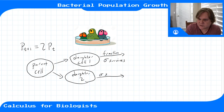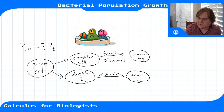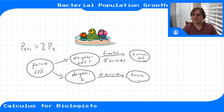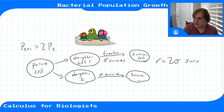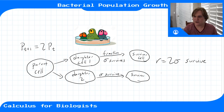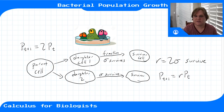So let's say on average a fraction sigma survive this generation. In this case we have r equals two sigma. Our new model becomes p(t+1) = r·p(t), where r = 2σ. So r doesn't necessarily have to be two — it could be less or more than that.